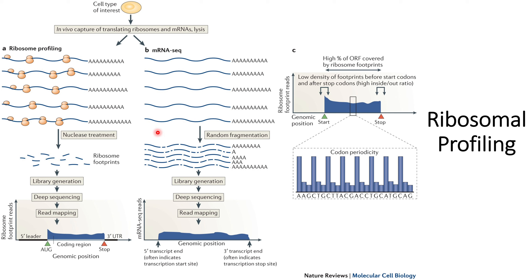Now let us compare with the usual mRNA-seq method to see why we do not get those advantages there. In mRNA-seq, the isolated mRNAs undergo random fragmentation — there is no nuclease treatment, so no degradation of mRNA occurs. After library generation and deep sequencing, we get the full genomic sequence, but we are not able to identify the positions of start codons and stop codons.